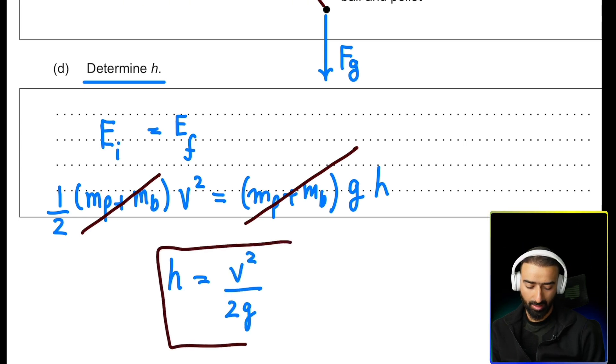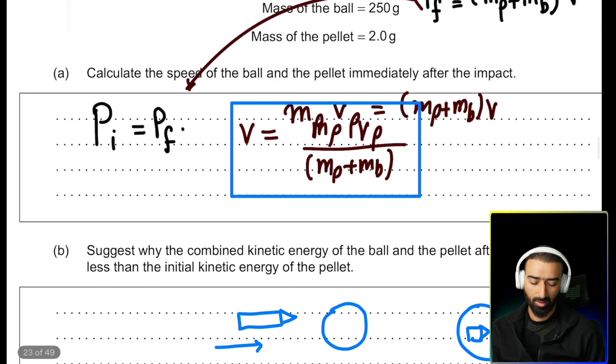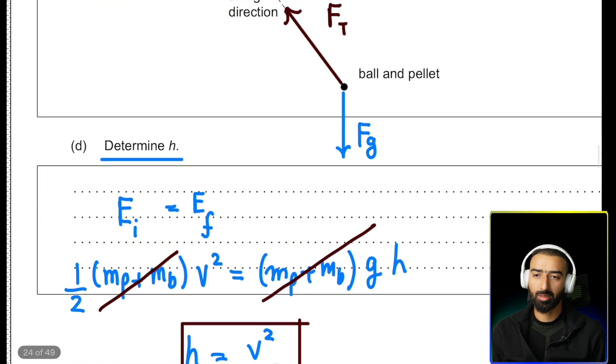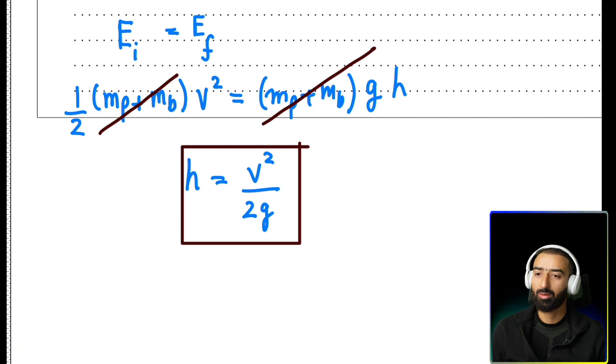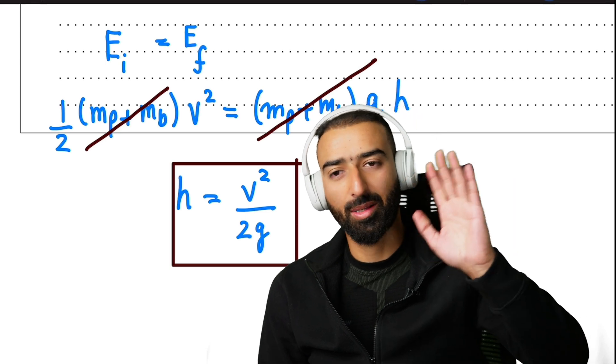And that's it. Now we just need to substitute the value of v, which we found here. This is the value of v that we found earlier by using the momentum conservation. And that completes the first problem from this paper. If you need more help, feel free to reach out to me and I'll be happy to help. I'll see you in the next one. Happy learning.